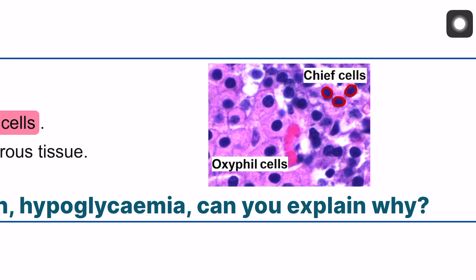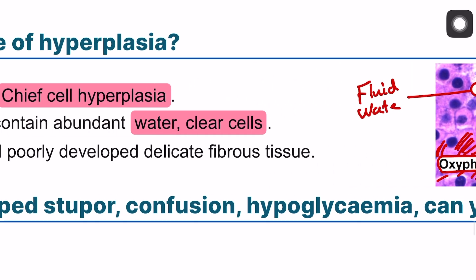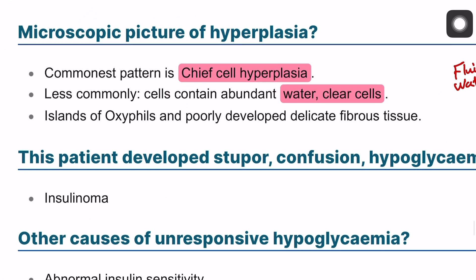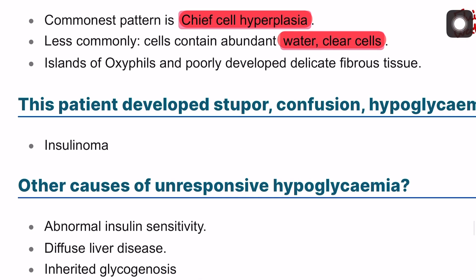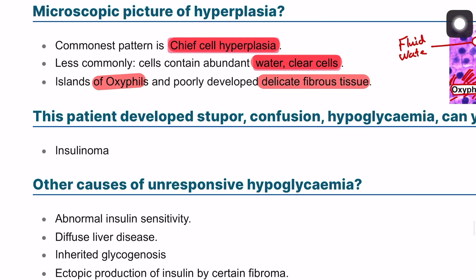Microscopically, parathyroid glands can show three patterns: chief cell hyperplasia, which is the main cell type with deep hyperchromatic features; oxyphil cell hyperplasia, appearing as pools of pink color; or clear cell hyperplasia, where cells are filled with water and fluid. The commonest pattern is chief cell hyperplasia, and the least common is clear cell hyperplasia. Islands of oxyphil cells with poorly developed delicate fibrous tissue may also be present.